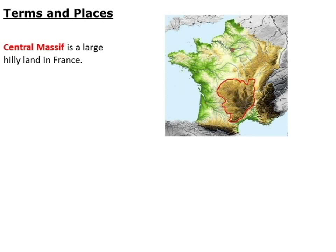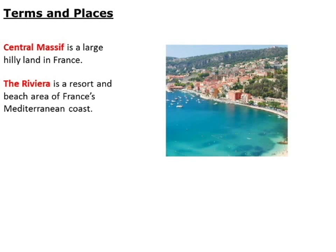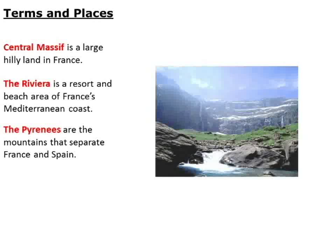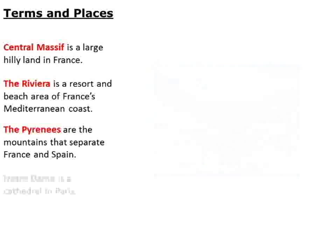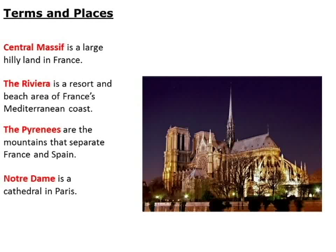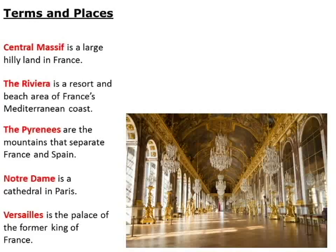Vocabulary. The Central Massif is a large hilly area in France, outlined right there on that map. The Riviera is a resort and beach area of France's Mediterranean coast - lots of resorts, casinos, beaches. The Pyrenees are the mountains that separate France and Spain. Notre Dame is a cathedral in Paris - if you saw the Disney Hunchback of Notre Dame, this is where it's set. And Versailles is the palace of the former king of France.